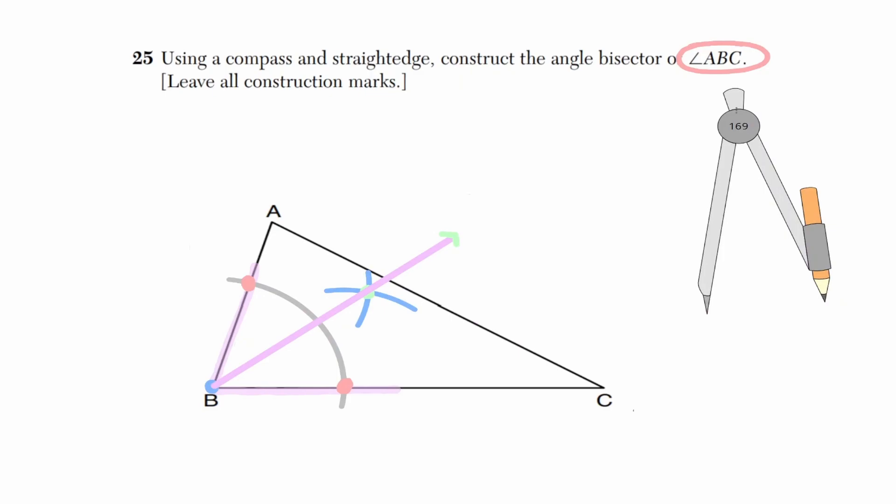If I connect that intersection with the vertex of our triangle, I have created our angle bisector. We can claim that the left-hand side of this angle is equal to the right-hand side of this angle.